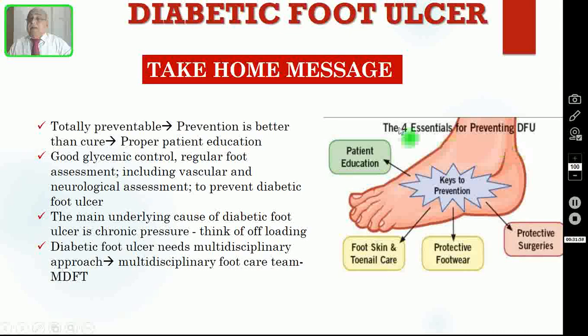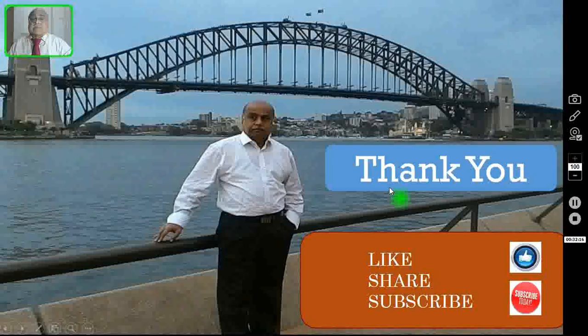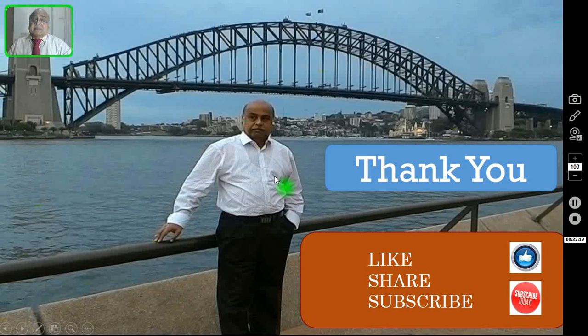The four essential things for prevention of diabetic foot ulcer are: educate the patient properly; take care of skin and toenail care; use protective footwear; and sometimes use protective surgeries like thorough wound debridement. Thank you very much for watching this video. If you think these videos are very useful, kindly subscribe to this channel and share this video on your social media. Thank you once again — let us meet in yet another video. Until then, bye-bye.